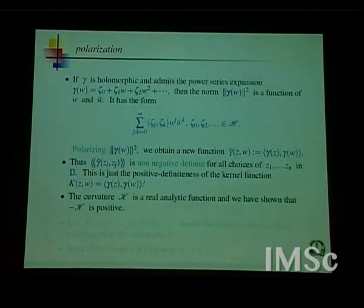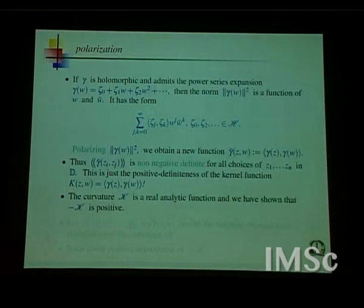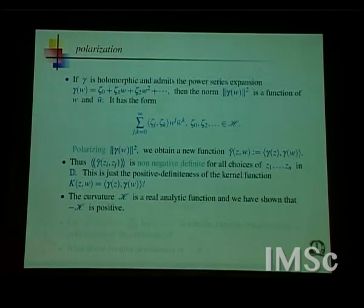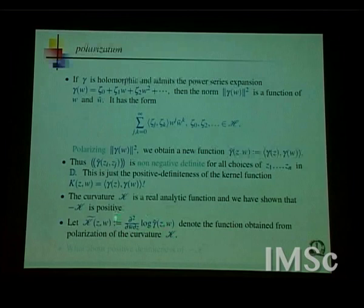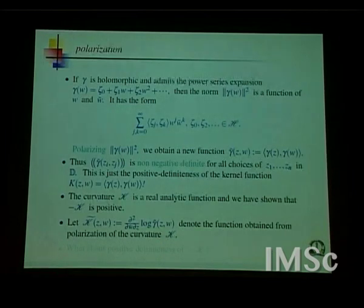The curvature itself, obtained by taking log and differentiating twice, is a real analytic function, and the Cauchy-Schwarz argument showed it is negative. Now we apply the same polarization trick to the curvature itself: rather than looking at it as a function of ω and ω̄, think of it as a function of z and w, holomorphic in z and anti-holomorphic in w. We are looking at a class of vector bundles whose curvature is negative.